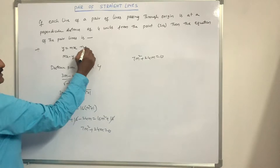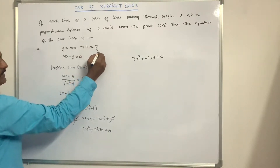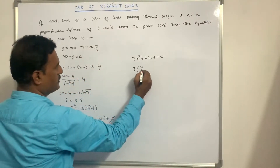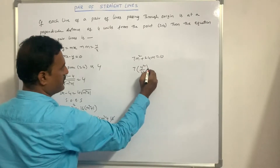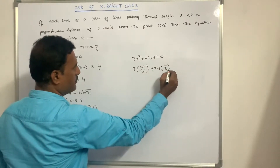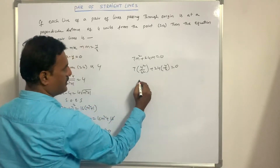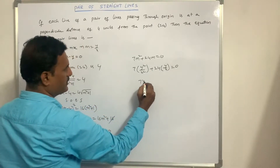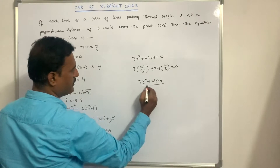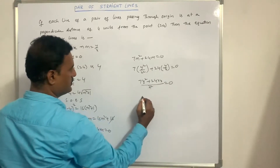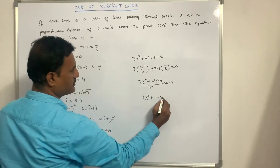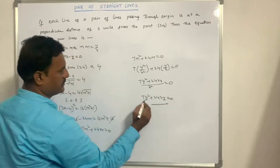From this equation, substitute m = y/x. So 7(y²/x²) + 24(y/x) = 0. Taking LCM: (7y² + 24xy)/x² = 0, which gives 7y² + 24xy = 0. This is the equation of the pair of lines.